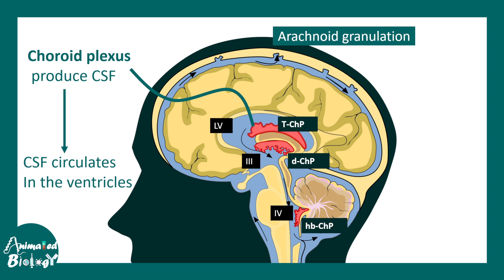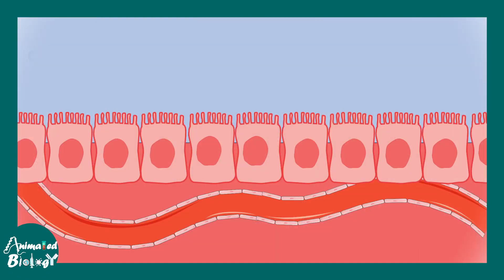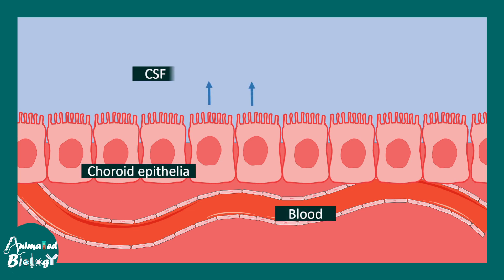Each of these choroid plexuses can secrete cerebrospinal fluid. Cerebrospinal fluid is kind of like a filtrate of the blood plasma. Here is the choroid epithelia, here is the blood, and here is the CSF.